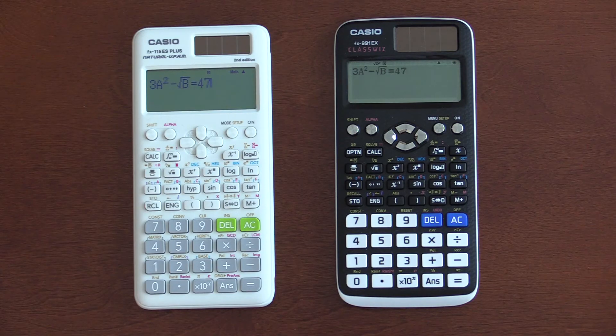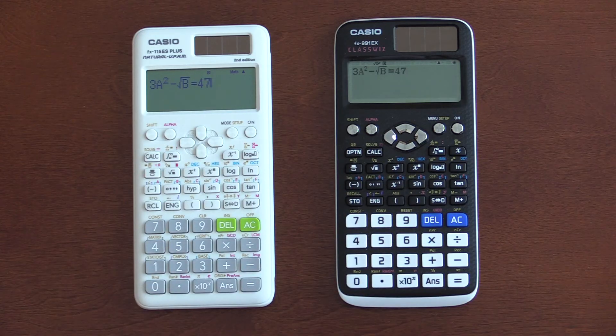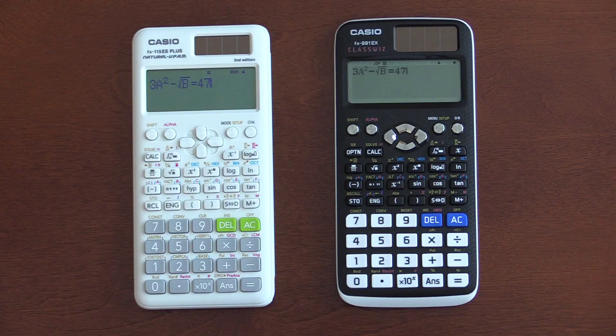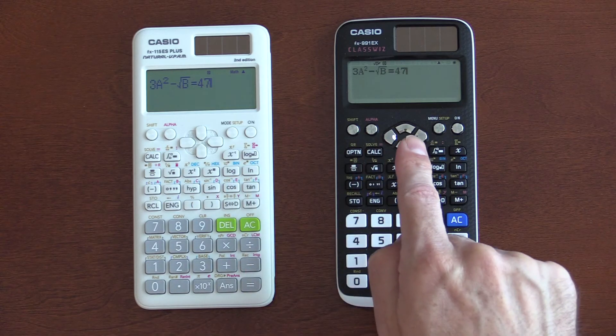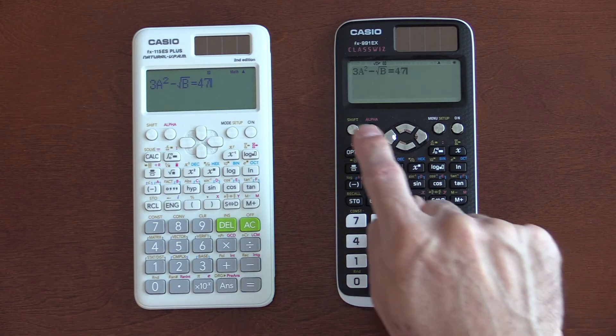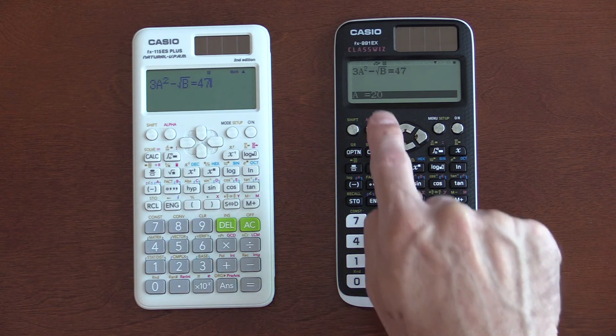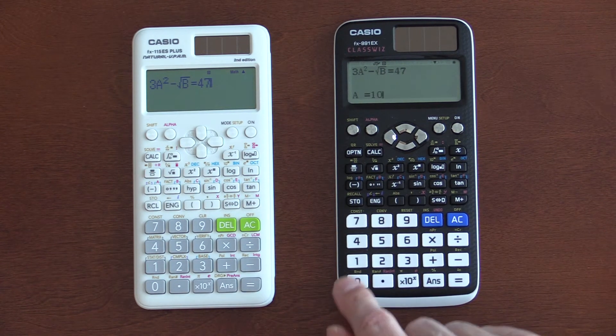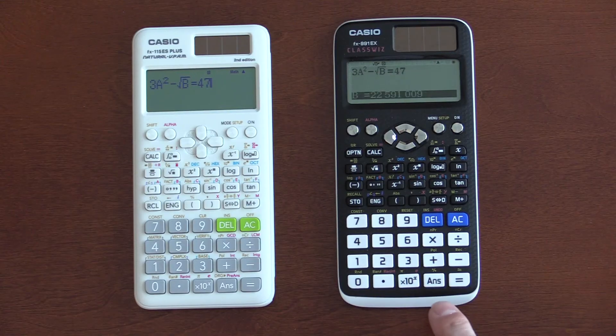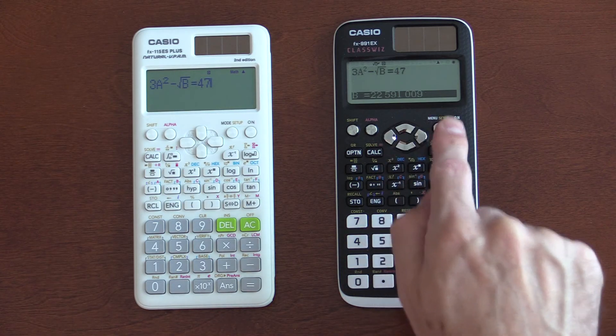In this next example, we have an equation with two different variables, a and b. And, we want to solve this for b. So, on the EX, I know normally I've been doing the ES first. But, on the EX, you go to solve, shift solve. And, you give it, let's say we knew that a was 10. So, we put in 10 for a, hit equal. And, then it says b equal and it gives a value.